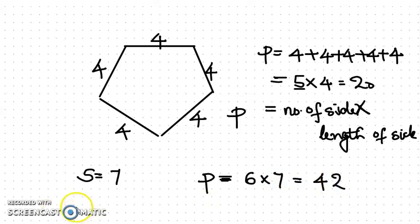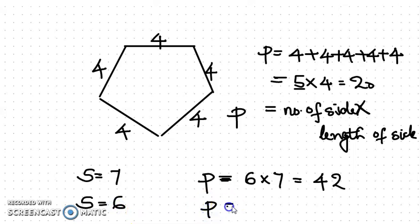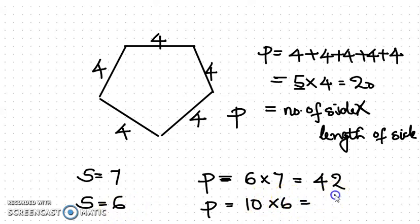Or in a regular decagon — decagon means 10 sides — where each side is 6 cm: perimeter equals number of sides into length of side, so 10 times 6, which is 60. This way we can find the perimeter of a regular polygon.